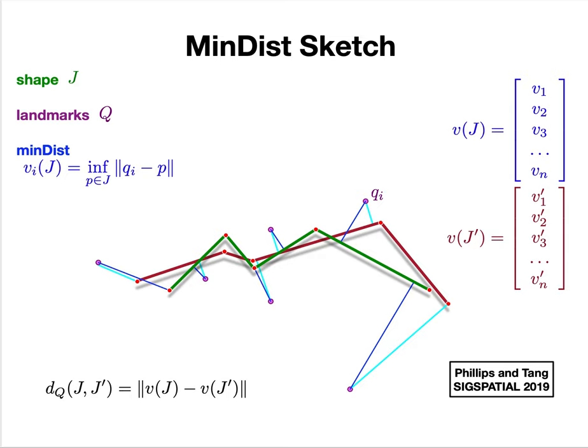The idea is I throw down these fixed landmarks, and for any shape I create these sketch vectors using Euclidean distance between the shapes. The advantage is I get this Euclidean vectorized representation, and everything downstream is easy.